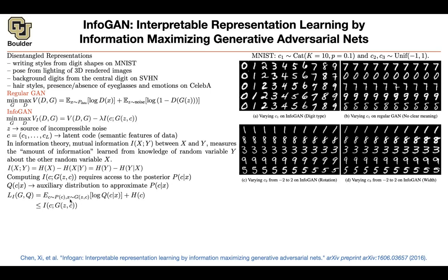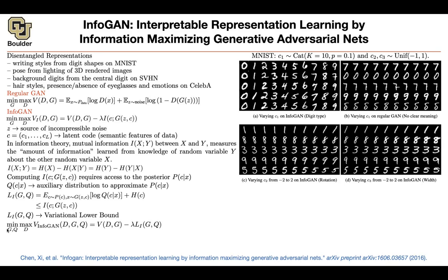You take Z from a normal distribution — this is incompressible noise — concatenate it with the vector sampled from your prior distribution, and push them through your generator to give you an image. Once you have the image, you evaluate Q, which is parametrized by a neural network, and you also have the entropy of C. This is your variational lower bound. Now you're going to maximize this by replacing I with this lower bound and changing your objective function.